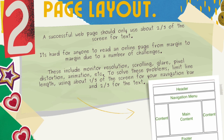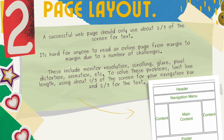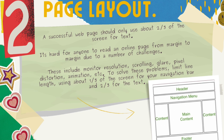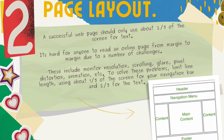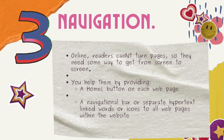Number two: page layout. A successful web page should only use about two-thirds of the screen for text. It's hard for anyone to read an online page from margin to margin due to challenges including monitor resolution, scrolling, glare, pixel distortion, and animation. To solve these problems, limit line length using about one-third of the screen for your navigation bar and two-thirds for the text.